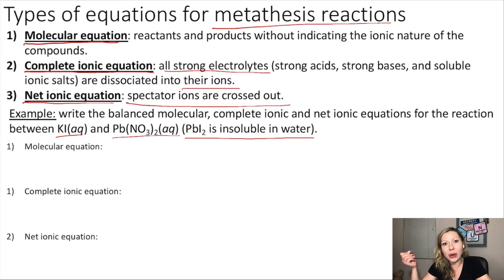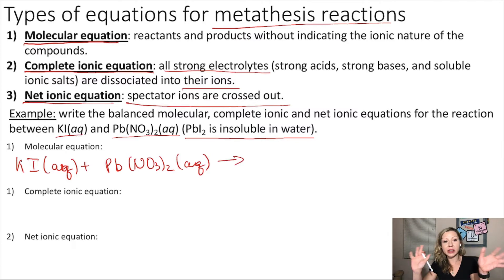So let's start with the molecular equation. We wrote this equation already in a previous video. We have KI potassium iodide, which is aqueous, plus lead nitrate Pb(NO3)2, which is also aqueous. Because this is a metathesis reaction, we are simply switching between ions. So potassium will be paired with nitrate ions, and iodide ions will be paired with lead ions.